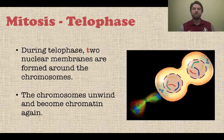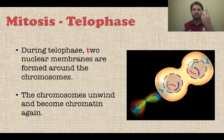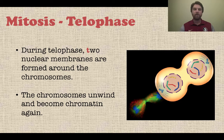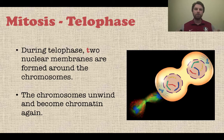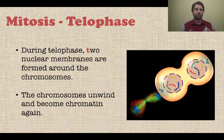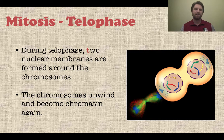Finally, the last phase of mitosis is called telophase. During telophase, two nuclear membranes are formed around the chromosomes. Now that you have a copy of your chromosomes, you can make a new nuclear membrane to make a new nucleus for each of the new daughter cells. The chromosomes start to unwind and relax and become chromatin again.